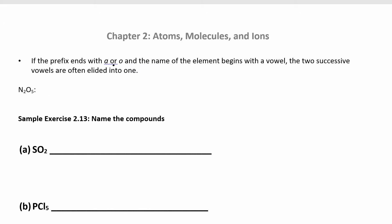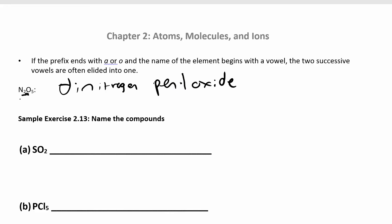If you have an O and an A together in the same name, you combine them into one. For example, nitrogen and oxygen becomes oxide. I have two nitrogens, so that's dinitrogen. Five oxygens would be penta, but instead of saying 'penta oxide,' you drop the A and say 'pentoxide.' So that's dinitrogen pentoxide.